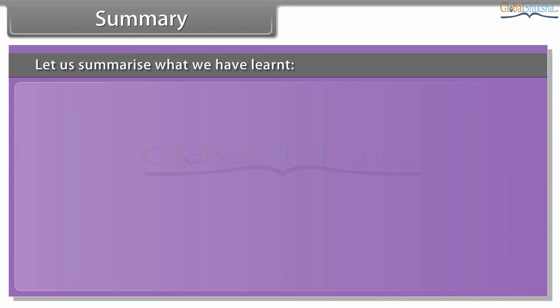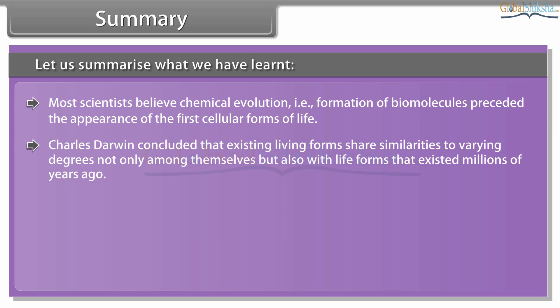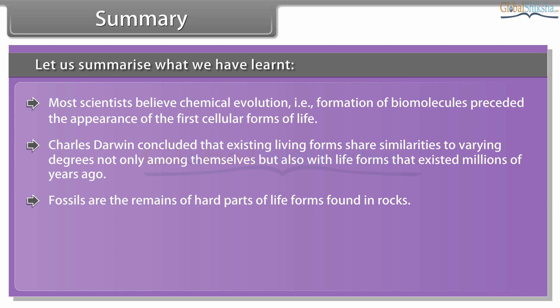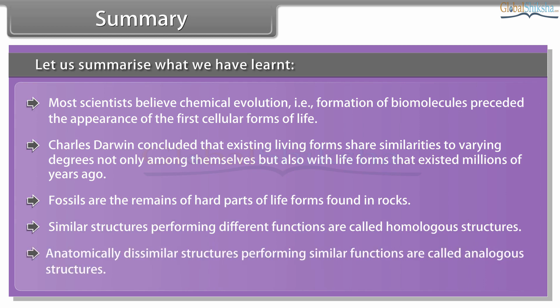Summary: Most scientists believe chemical evolution — that is, the formation of biomolecules — preceded the appearance of the first cellular life forms. Charles Darwin concluded that existing living forms share similarities to varying degrees, not only among themselves but also with life forms that existed millions of years ago. Fossils are the remains of hard parts of life forms found in rocks. Similar structures performing different functions are called homologous structures. Anatomically dissimilar structures performing similar functions are called analogous structures.